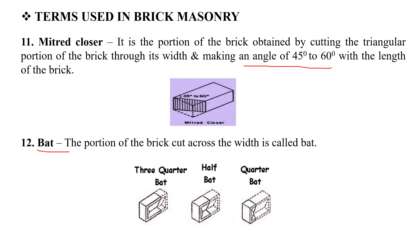The bat is of 3 types: three-quarter bat, half bat, and quarter bat. For the three-quarter bat, we cut the brick at one-quarter from the end, so the remaining portion is three-quarters. The half bat is cut at the center width. The quarter bat is cut at three-quarters, leaving one-quarter of the brick.